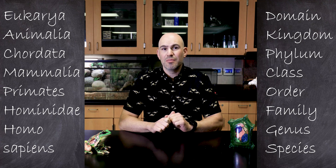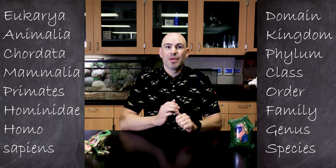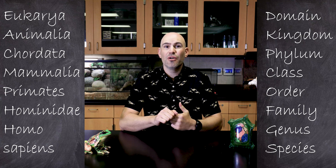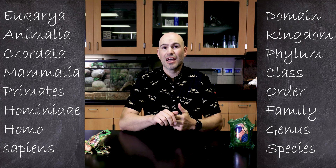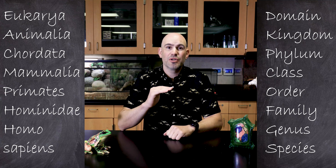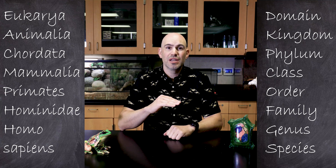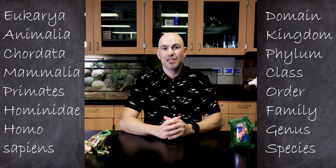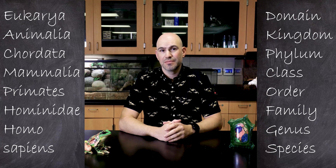Within the mammal group, I am a primate, I am a Hominidae, I am a Homo, and I am a sapien. And these eight taxonomical groups help us to classify living things.